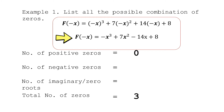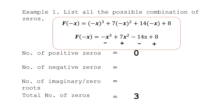Substituting −x, we get (−x)³ + 7(−x)² + 14(−x) + 8, which simplifies to −x³ + 7x² − 14x + 8. From this simplified polynomial, the signs of the terms are: negative x³ is negative, +7x² is positive, −14x is negative, and +8 is positive. Counting the variations in sign: negative to positive is one variation, positive to negative is another variation, and negative to positive is another variation.